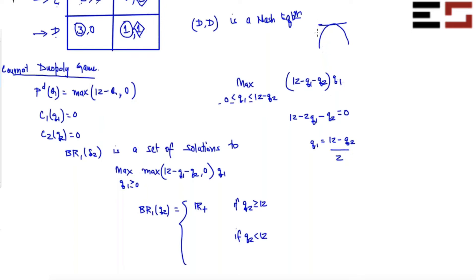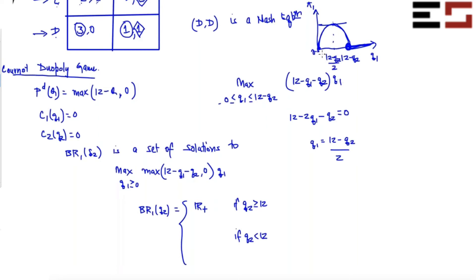If you plot the profit: it's concave, shaped like an arch. At Q1 = 0, profit is 0; at Q1 = 12 minus Q2, profit is 0; and after that the profit is 0 as well. The profit is on the vertical axis and Q1 on the horizontal axis. The point that maximizes profit is 12 minus Q2 divided by 2. So there is only one best response in this case, which is (12 minus Q2) / 2.